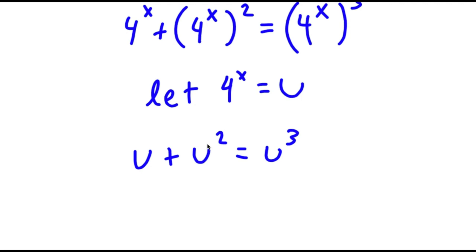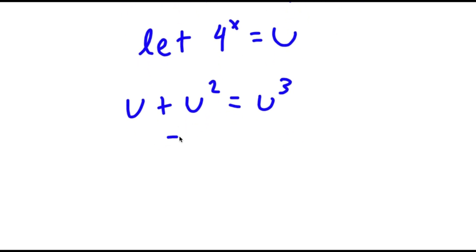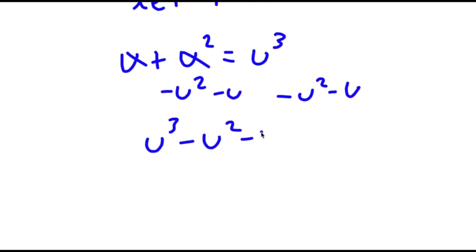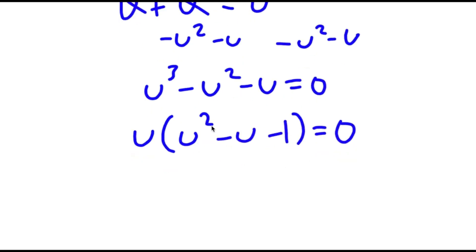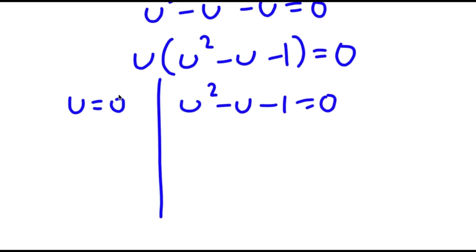To solve this, I'm going to start by subtracting u squared and u on both sides. These two cancel out and now I have u to the power of 3 minus u squared minus u is equal to 0. I can factor out u, so I have u times (u squared minus u minus 1) equals 0. This gives u equals 0, which is already a solution, and u squared minus u minus 1 equals 0.